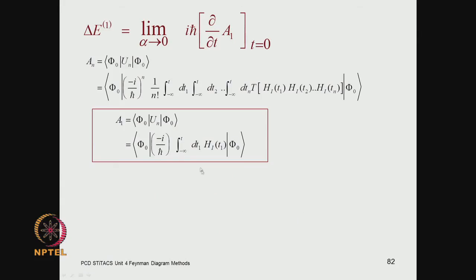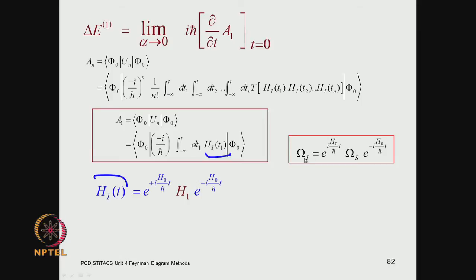This is the general expression for A_n. For n equals one, we have this expression with only one time integral, where H_I appears only once with a dummy label t1 which gets integrated out. The limits of integration are from minus infinity to t. In general, you can carry out the transformation from a Schrödinger picture operator to an interaction picture operator using the general prescription: H_I is obtained from the Schrödinger picture operator H1 by applying e^(iH0/h-bar * t) * H1 * e^(-iH0/h-bar * t).